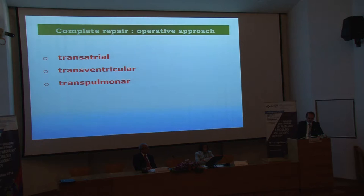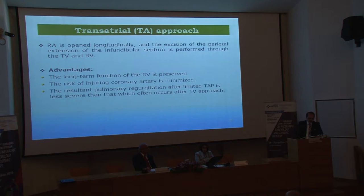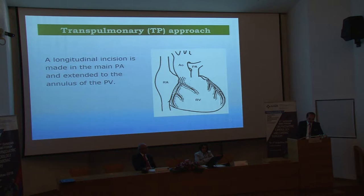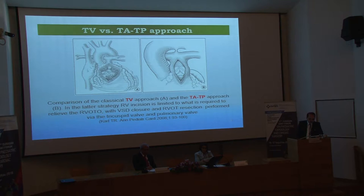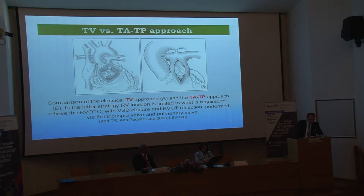Commonly, there are three operative approaches that can be used for complete repair: the transatrial, transventricular, and transpulmonary approaches. The proven advantages of the transatrial approach include long-term preservation of the right ventricle, minimization of the risk of injuring the coronary arteries, and less severe resulting pulmonary regurgitation after limited transannular patching. The transpulmonary approach involves a longitudinal incision in the main pulmonary artery extended to the annulus of the pulmonary valve. In the transatrial transpulmonary approach, the right ventricle incision is limited to what is required to relieve the RVOT, with VSD closure and RVOT resection performed via the tricuspid and pulmonary valve.